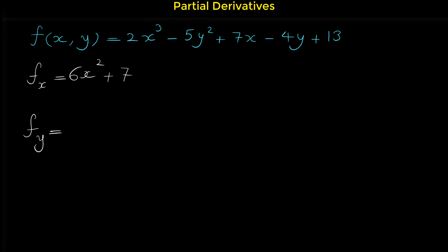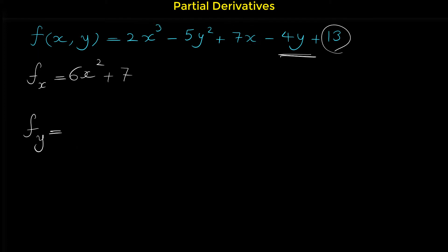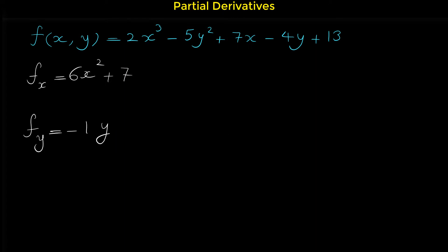Now, what is the partial derivative with respect to y? When we take the derivative with respect to y, y is the variable and all other variables are treated as constants. The derivative of 2x³ is zero because there is no y. The derivative of negative 5y² is negative 10y. The derivative of 7x is zero, and the derivative of negative 4y is negative 4.